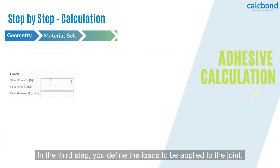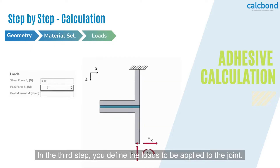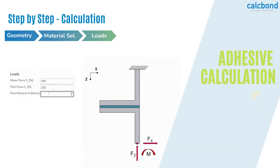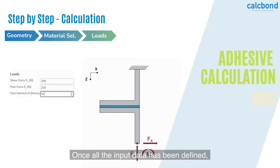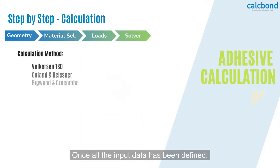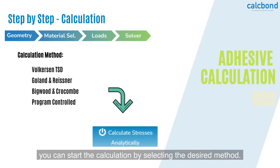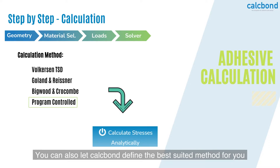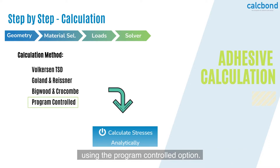In the third step, you define the loads to be applied to the joint. Once all the input data has been defined, you can start the calculation by selecting the desired method. You can also let CalcBond define the best suited method for you using the program control option.